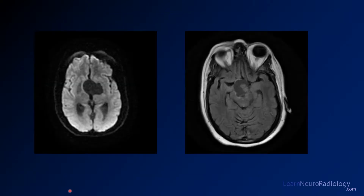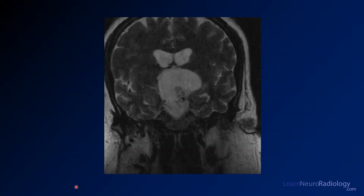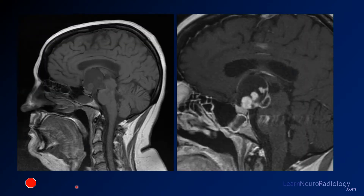Now we have some MR images. On the left, this is diffusion; on the right, this is FLAIR. Here's a coronal T2 image, and we'll finish up with pre- and post-contrast imaging.